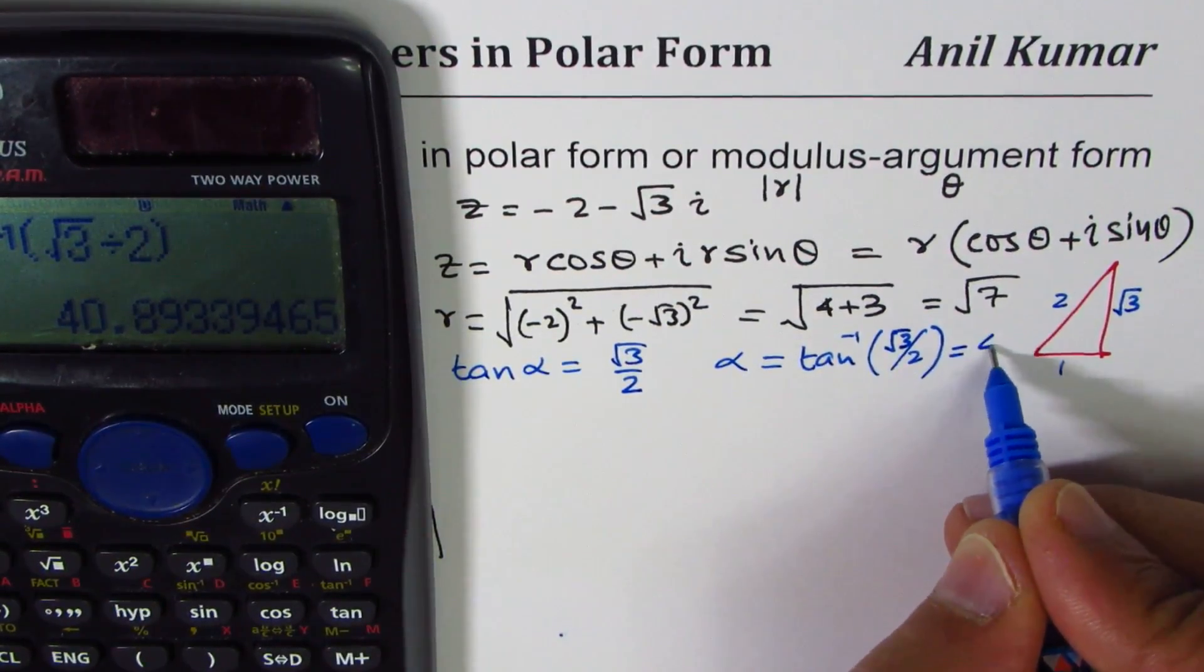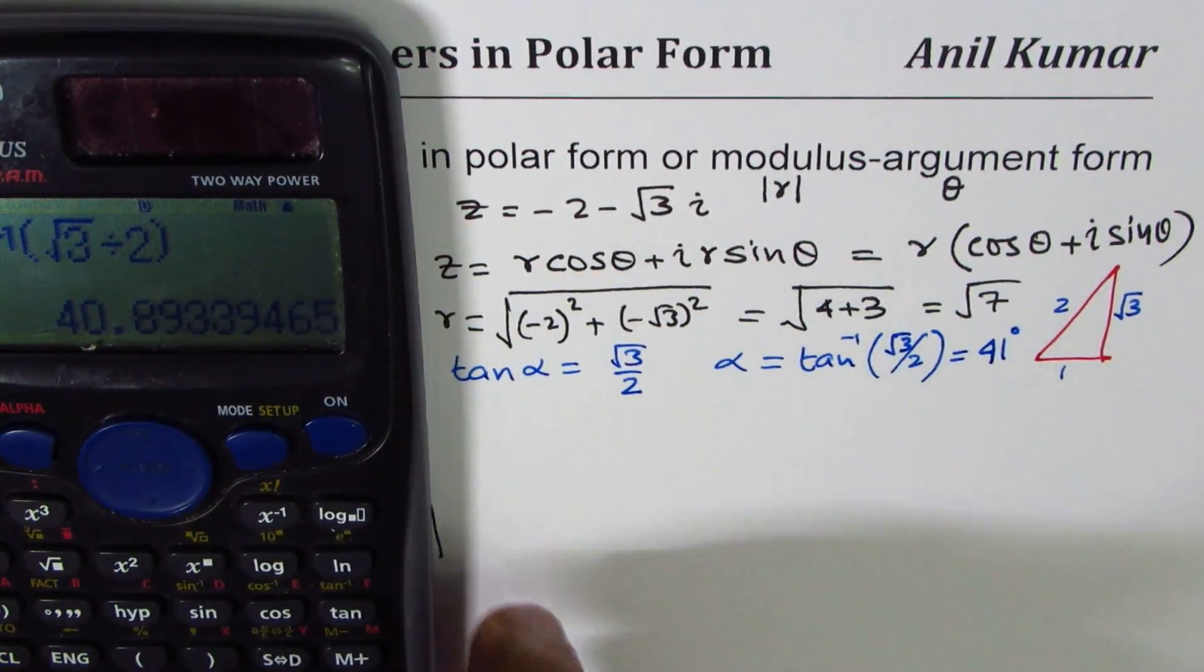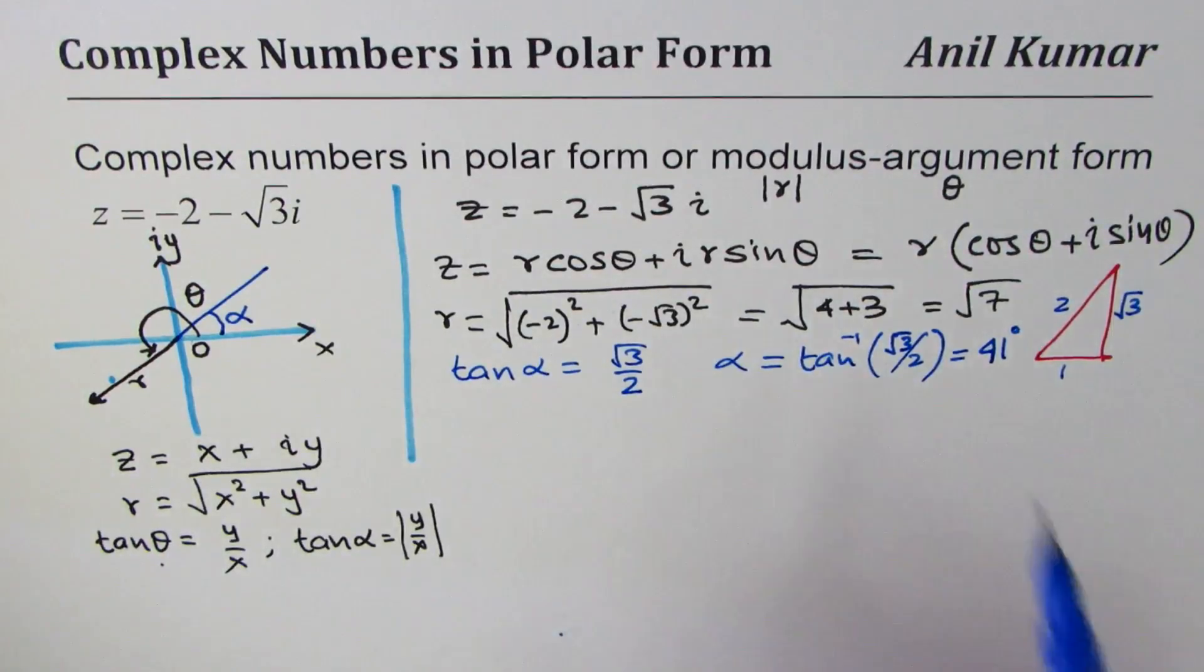This seems to be in degrees, so we'll just round this to 41 degrees. It says 40.89, so I'm rounding it to 41 degrees.